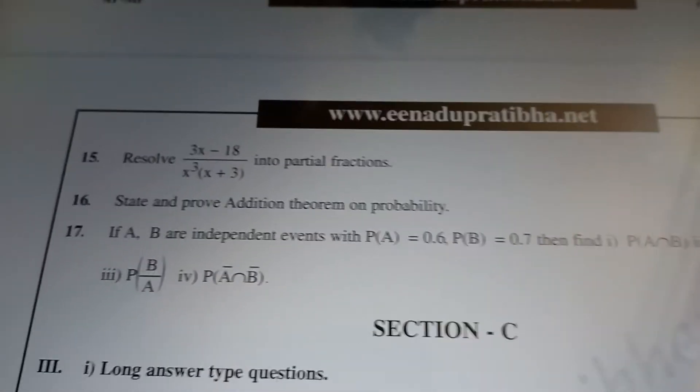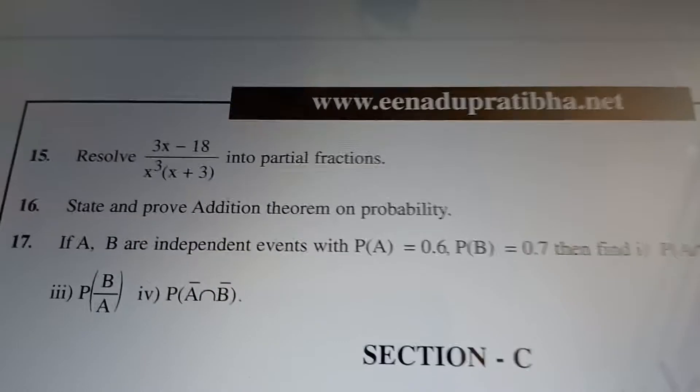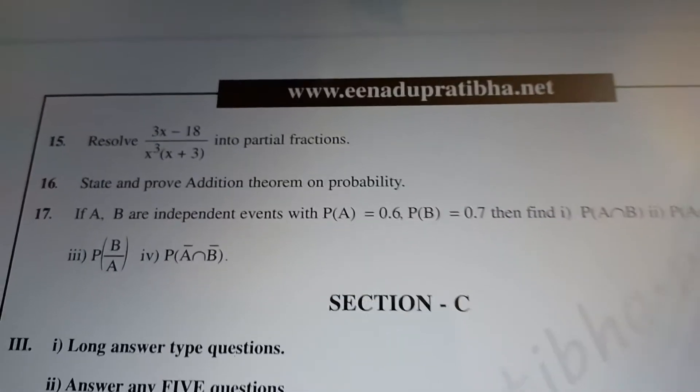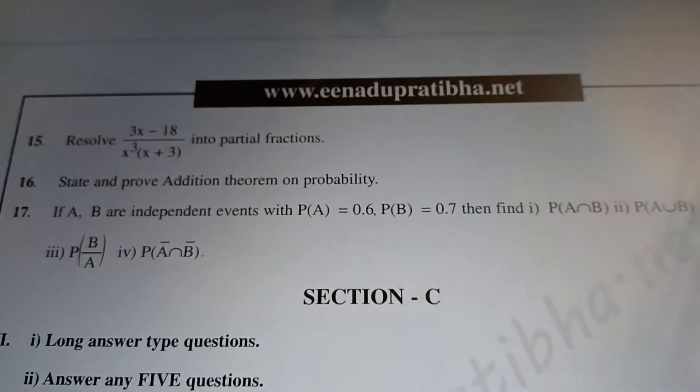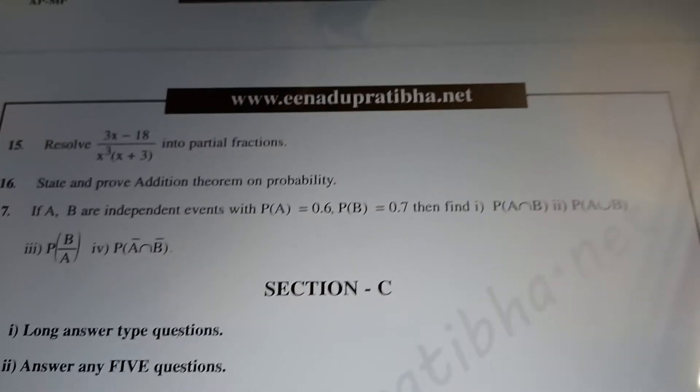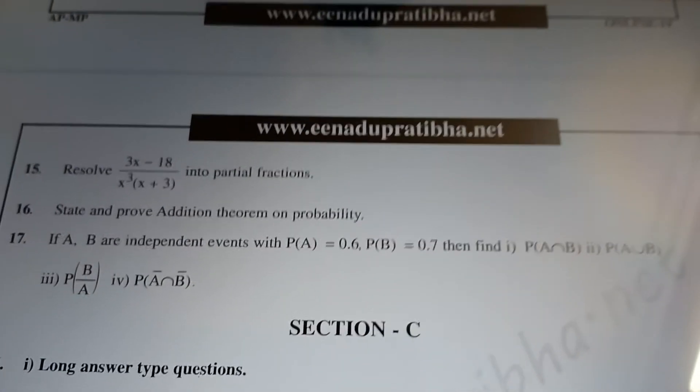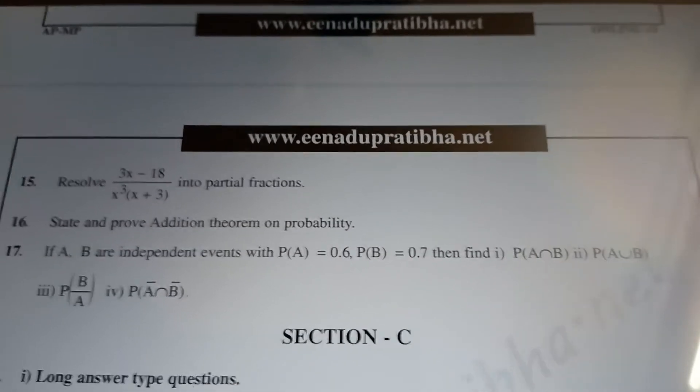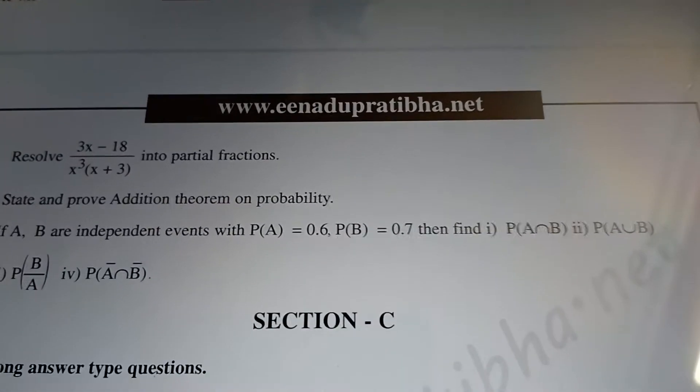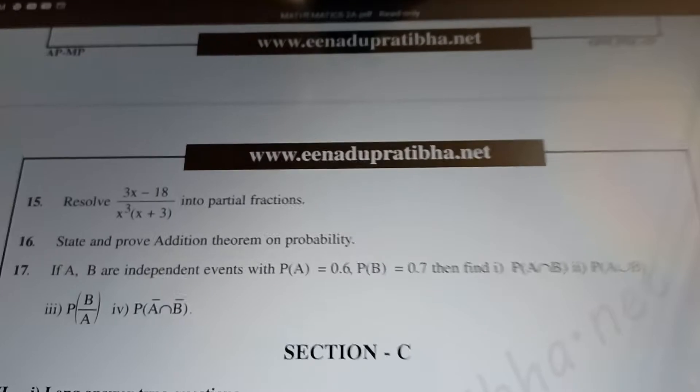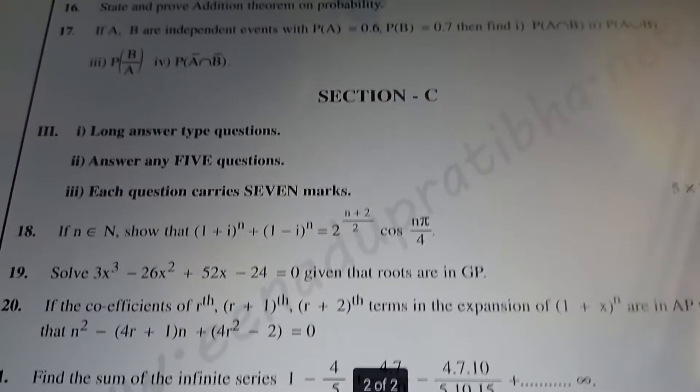Now, you have a question about my integration with the same pattern. You got my point? Next, addition theorem on probability is given. Next, P of A, P of B is given. Then find the value of P of A intersection B, P of A union B, P of B by A, P of A bar intersection B bar.